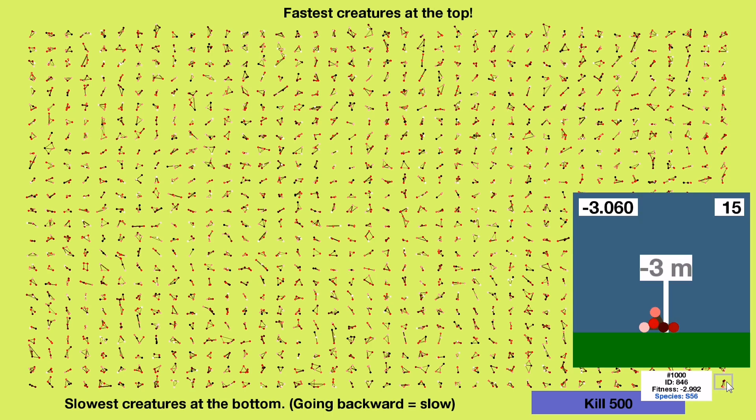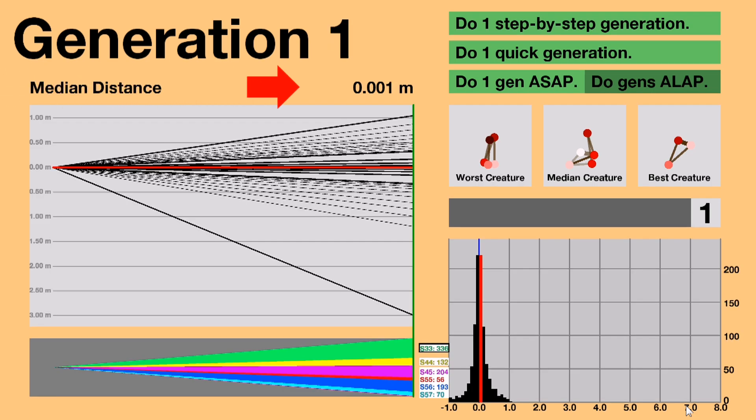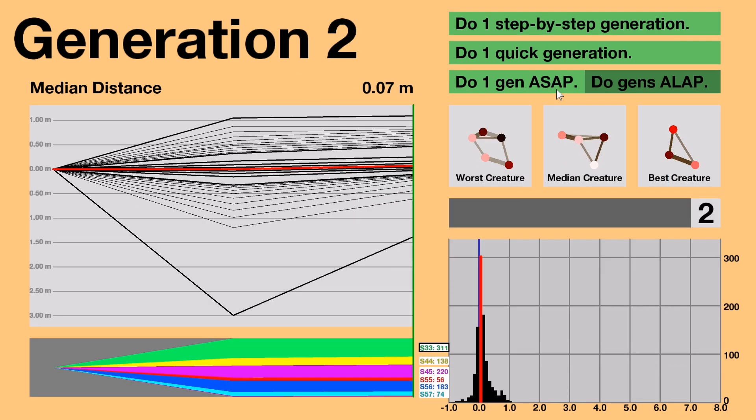Also, upgrading from processing 1.5.1 to processing 2.2.1 caused some weird changes to happen, like these oddly textured rectangles. I like how they look though, so I'll leave it how it is. This time, the median distance for Generation 1 is positive, which means that over half of our creatures went in the right direction. That's just due to chance, though.